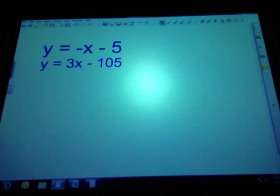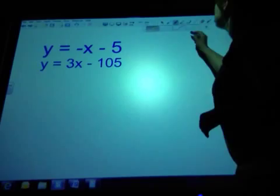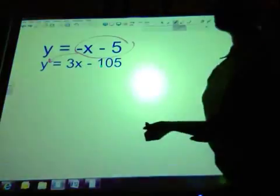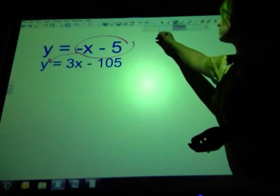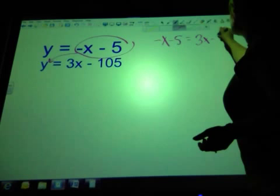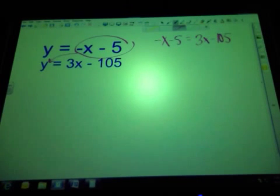So in this first equation we have, we have both equations equal to y. That means it would probably be easier if we went ahead and used substitution. So we're going to plug negative x minus 5 in place of the y in the other equation. Or since they're both equal to y, we put them equal to each other. So negative x minus 5 equals 3x minus 105. And then we go ahead and work out and solve for x.